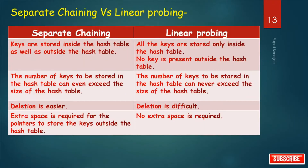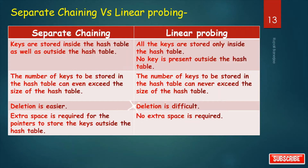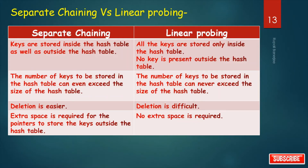The difference between separate chaining and linear probing: in separate chaining, keys can be stored both inside and outside the hash table, and the number of keys can exceed the size of the hash table. In linear probing, all keys are stored only inside the hash table and cannot exceed its size. Deletion is easier in separate chaining because a linked list is used, while deletion is difficult in linear probing. Separate chaining requires extra space for pointers, while linear probing requires no extra space.